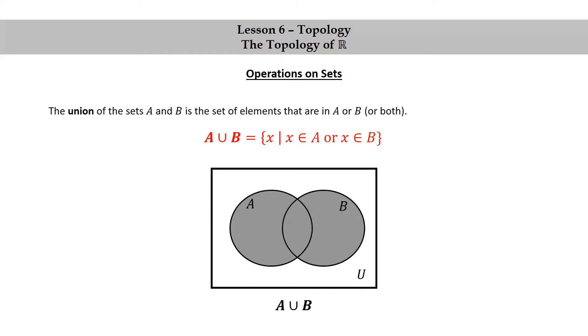Here's a Venn diagram representing the union of A and B. You can see that we shade completely all of A and all of B, including the intersection.